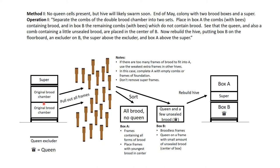Here is the original configuration. The super is not used in the sorting process, so put it to the side for now. Have ready two empty hive bodies in which to place the sorted frames. The basic idea of the sorting is to separate the queen from her brood. Do not shake the bees off of the frames during the sorting process. Start pulling out frames one by one.